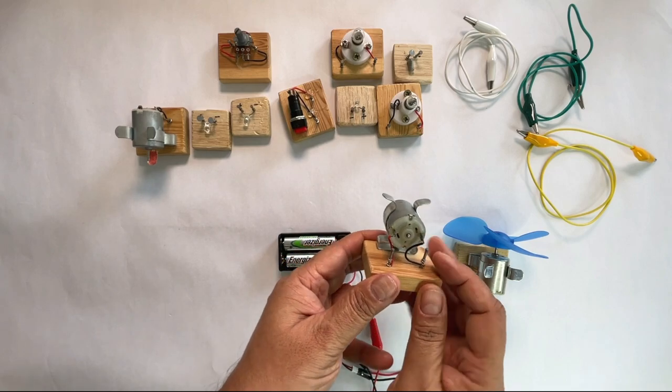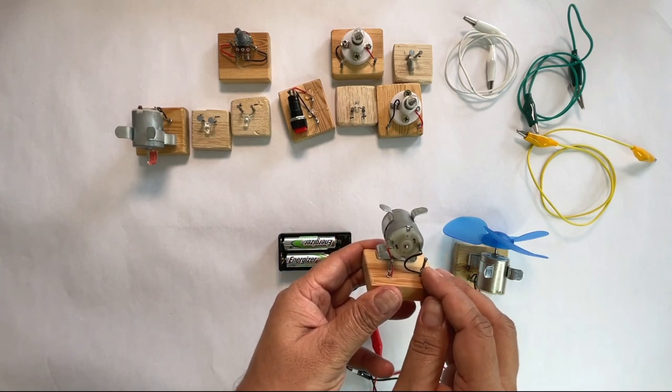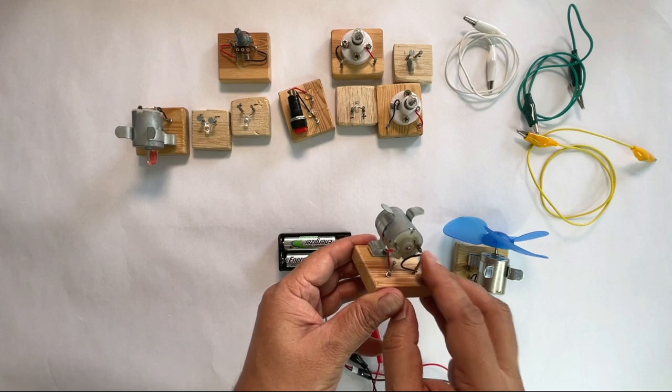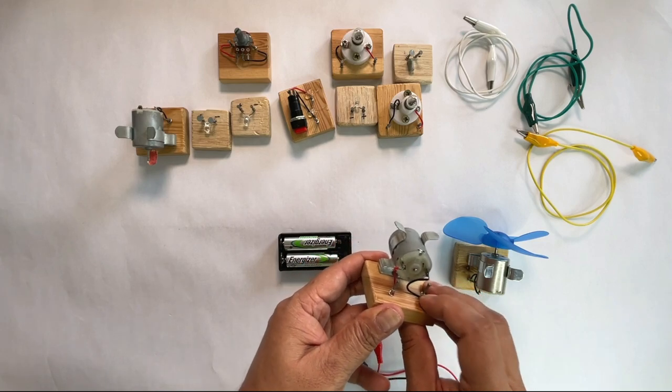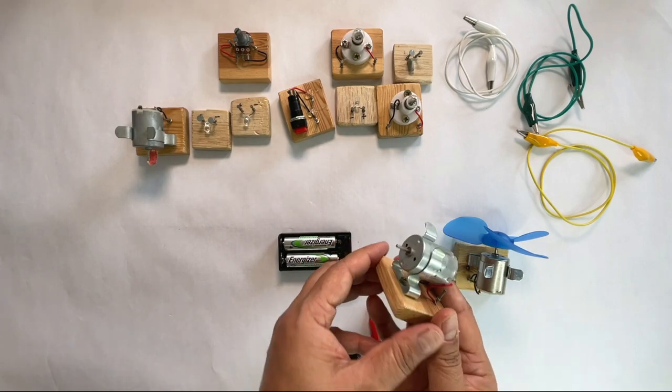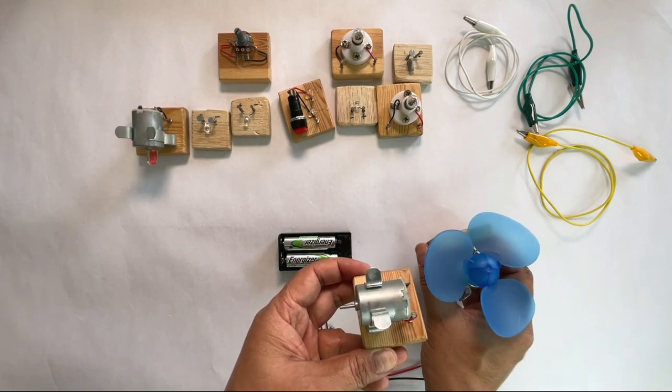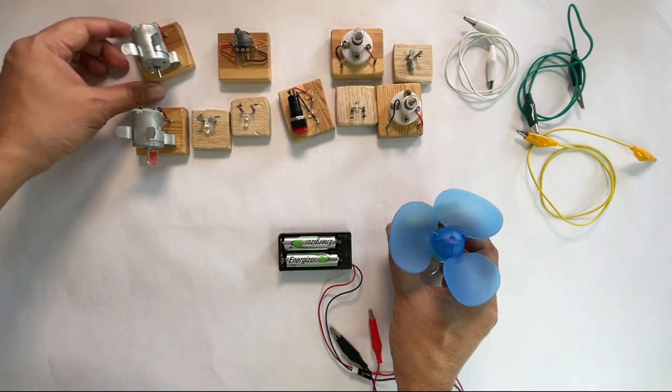We have got a DC motor here. It is mounted on a wooden block and the two terminals of the motor are connected with wires to two nails. We have attached a propeller to the motor so that we can see the rotation.